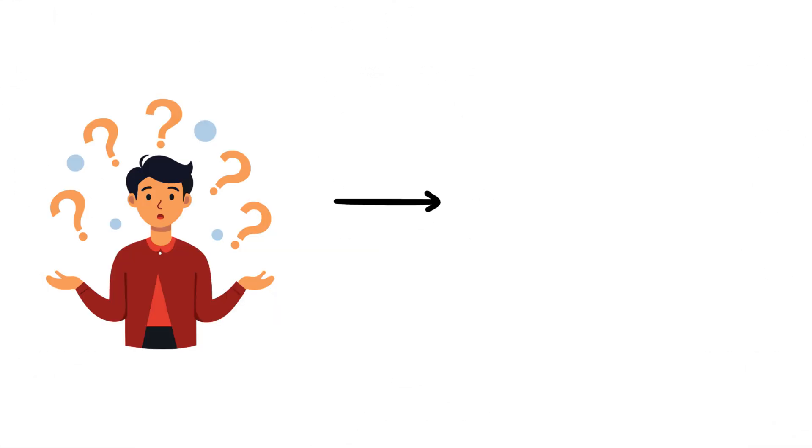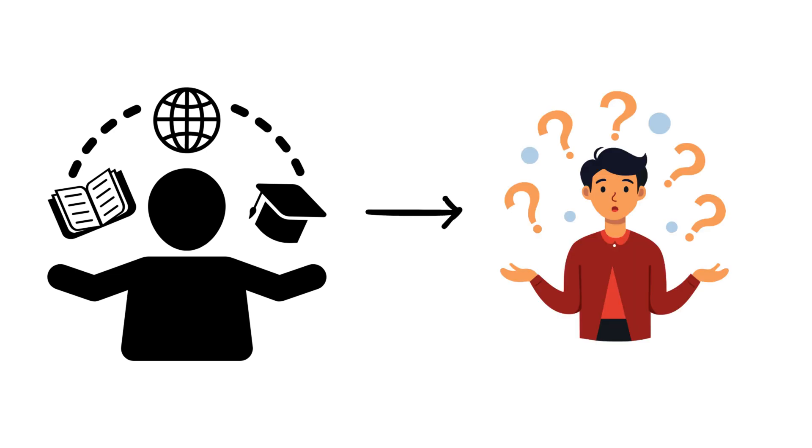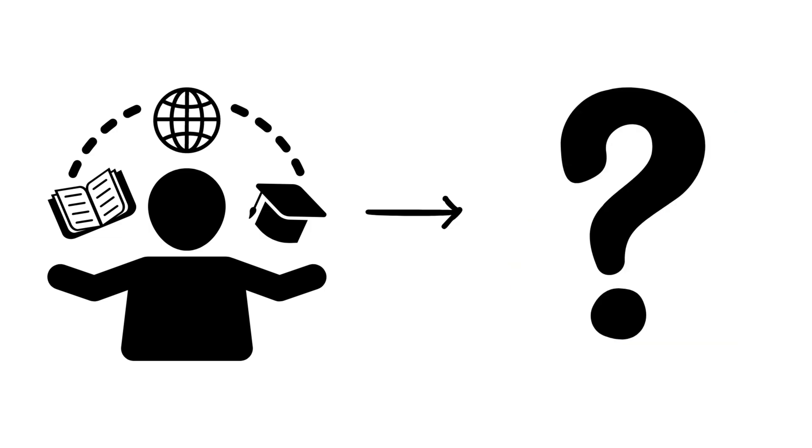Meno's paradox. The paradox questions how one can inquire into something they don't know, given that if you know what you're looking for, inquiry is unnecessary, and if you don't know, how can you recognize the answer?